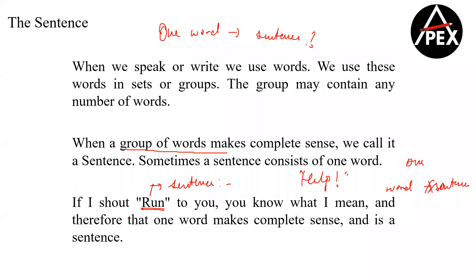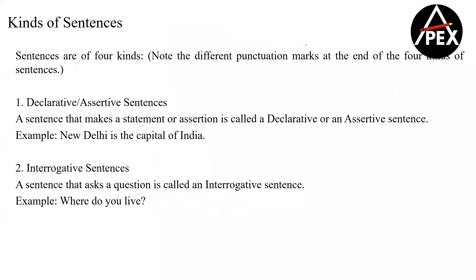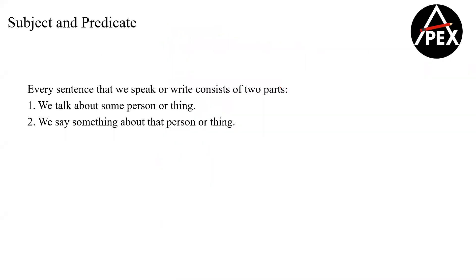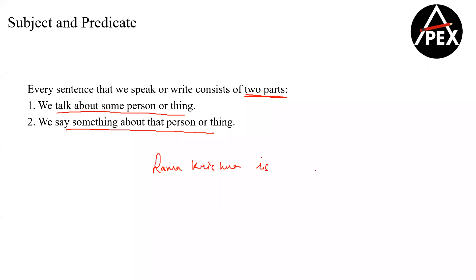That is because in every kind of sentence, we have two things we always look for — two parts. The first part should be someone or something we are talking about. The second part is something we are telling about that person. For example: 'Ramakrishna is a student of GVP.'